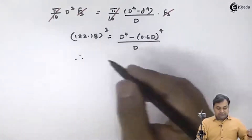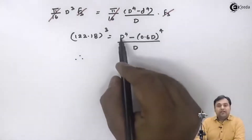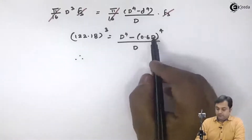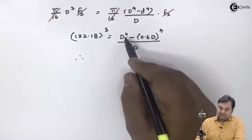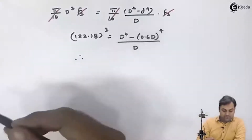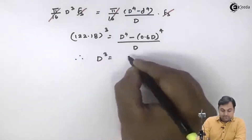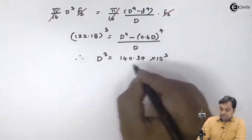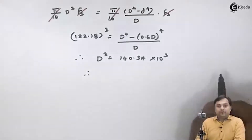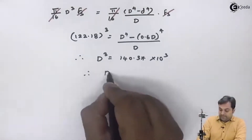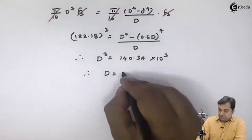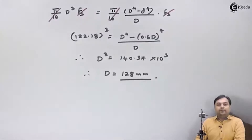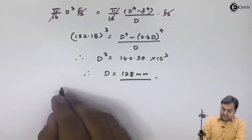Calculating the terms on the right-hand side, D⁴ − (0.6D)⁴ divided by D gives D³. Therefore I have D³ = 140.37×10³, and taking the cube root, capital D (the outer diameter of the hollow shaft) equals 128 mm.